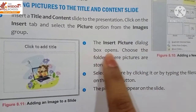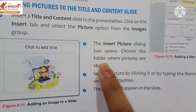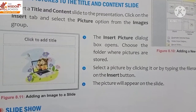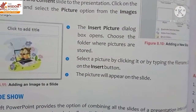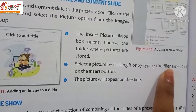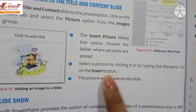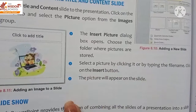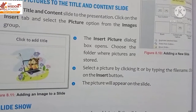The Insert Picture dialog box will open. Choose the folder where your pictures are stored. Select a picture by clicking it, or by typing the file name. Then click on the Insert button. The picture will appear on the slide.